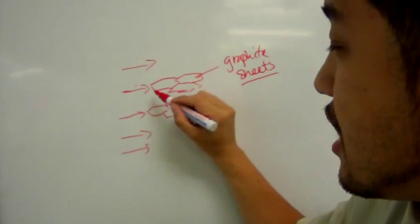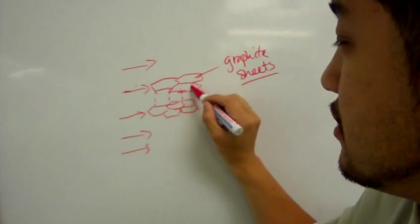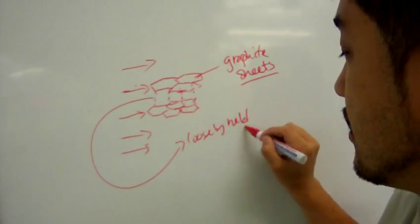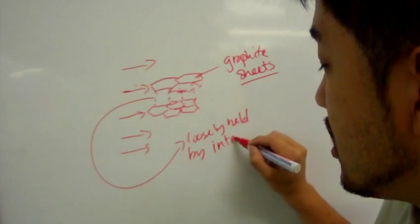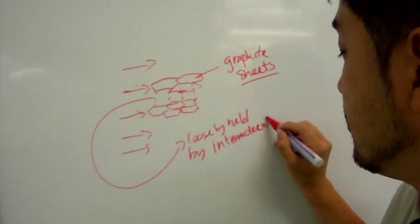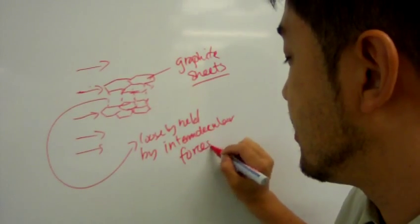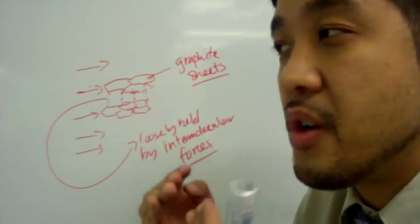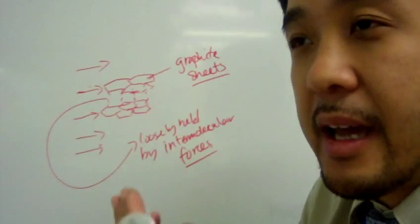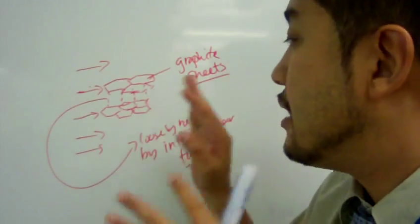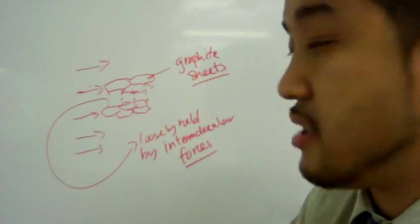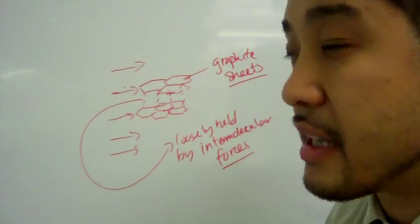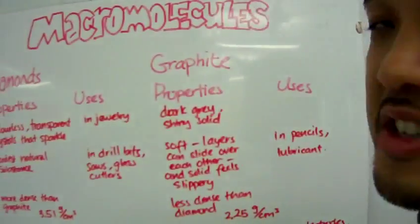And these graphite sheets are very loosely held by intermolecular forces. What are intermolecular forces? It is a force of attraction between two different molecules. Those forces are not strong enough to form bonds, but it is kind of there. So, these two properties, the free electrons and those loosely held graphite sheets by intermolecular forces, gives graphite some very cool properties. Let's take a look at that.